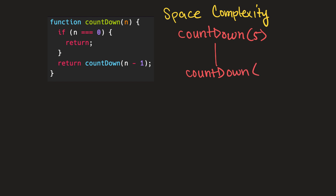Five minus one is going to be four. And once again we'll end up at the base case check and call the function again with four minus one. We'll continue to do this until we pass zero as our n to the function.